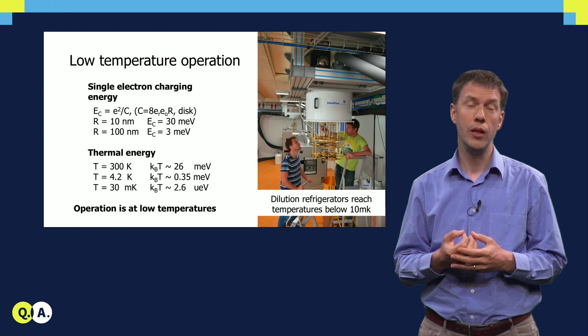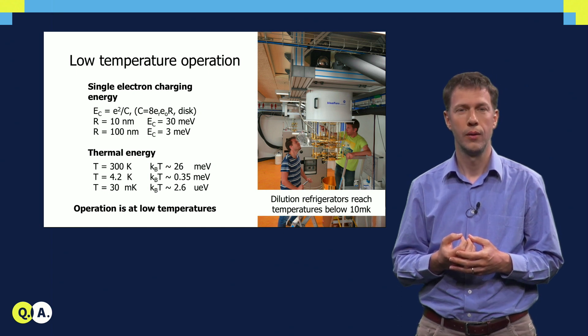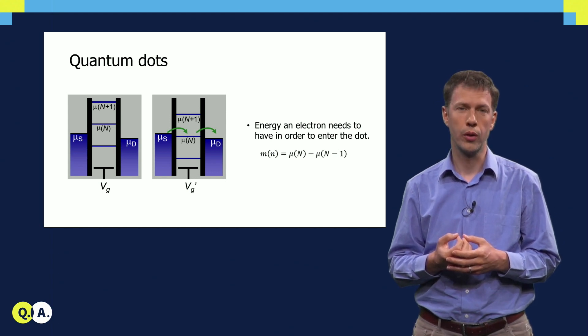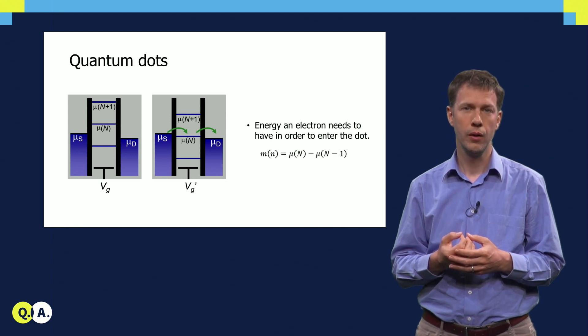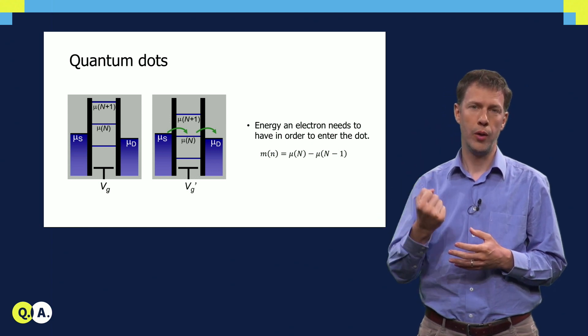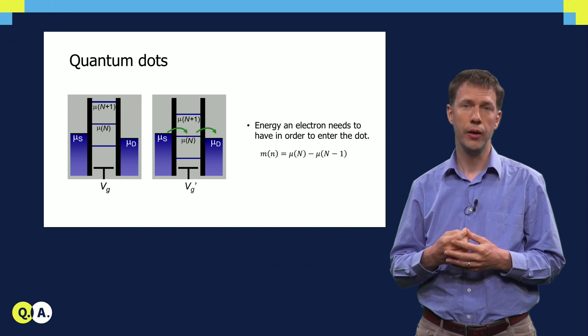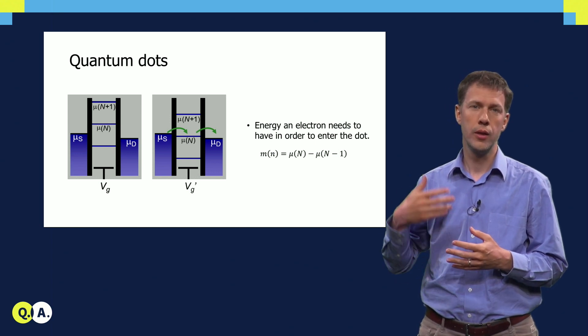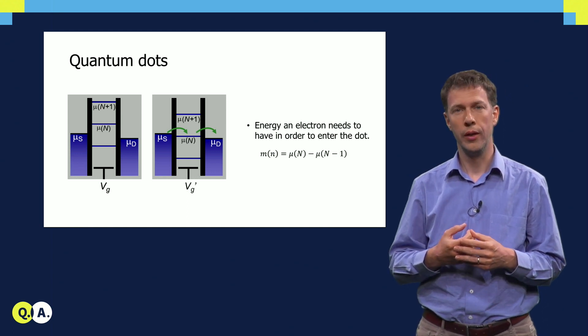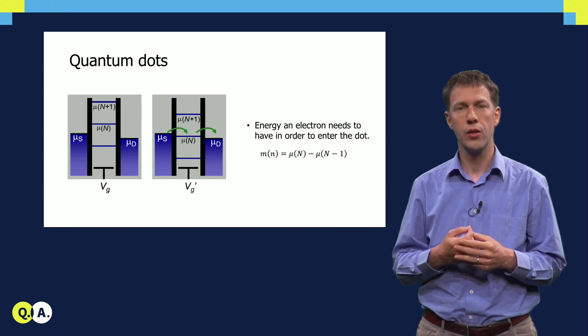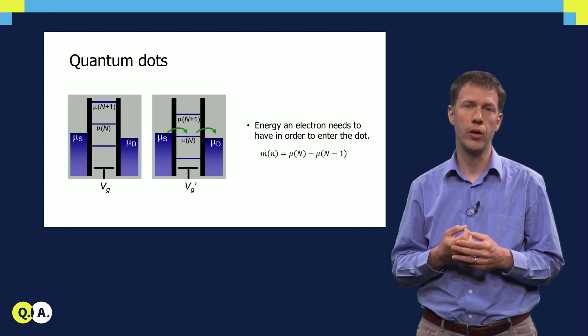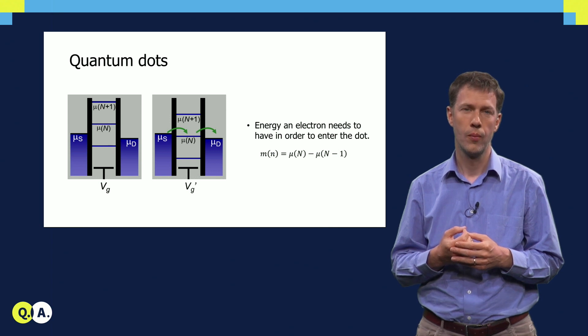But how do we know that individual charges are being added to the island? The standard method is to look at the current that flows between the contacts through the quantum dot, the central island. In this schematic, we see a set of lines, called electrochemical potential lines, that can be pushed up or pulled down by the gate voltage as a ladder. And each line indicates the energy needed to add the next electron to the island. What we see in the configuration on the left is that the energy is larger than the energy of the highest occupied state in the reservoir, called the Fermi energy. So the electrons in the reservoir don't have enough energy to go into the quantum dot.